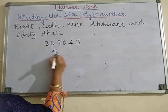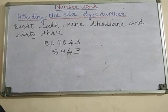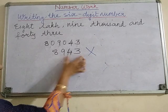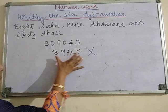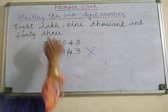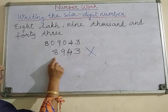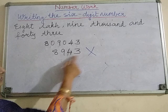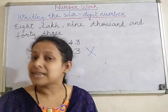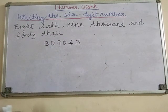We cannot write this number as eight-nine-four-three without the zeros. That would be only a four-digit number, not six digits. If you write it as a four-digit number, you will actually get eight thousand nine hundred and forty-three - which is completely wrong. When lakh is given, you must understand it is a six-digit number, and all six digits must be present.